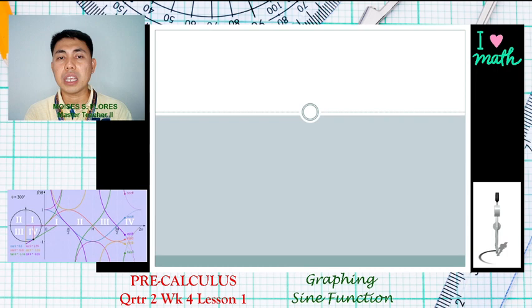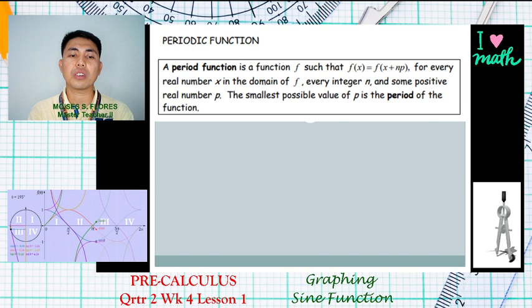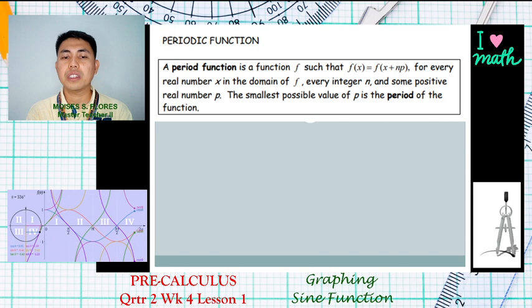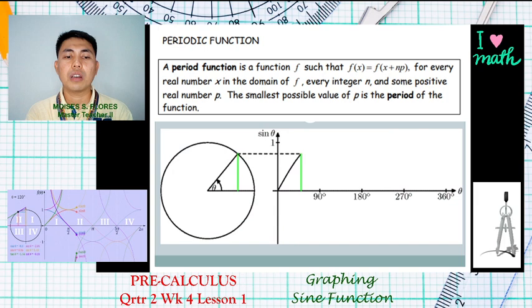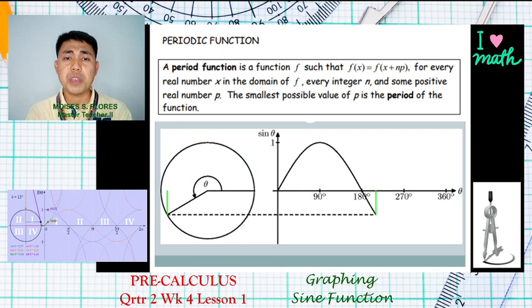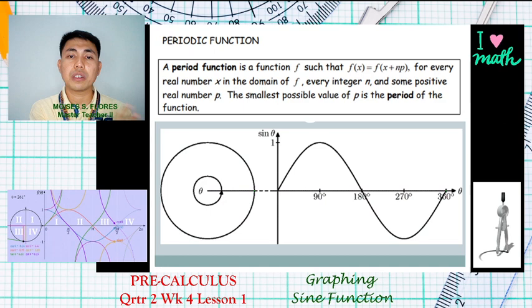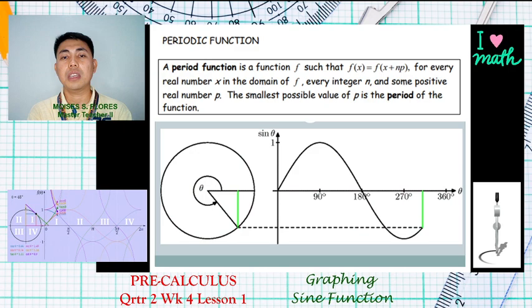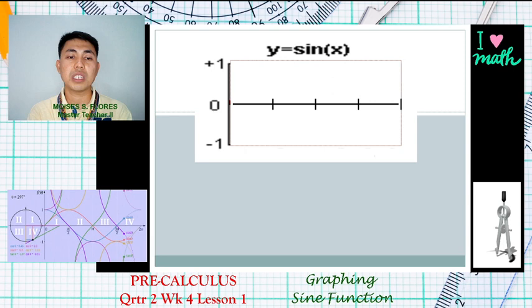Bear in mind that the sine function is a periodic function. A periodic function is a function such that f(x) = f(x + nP) for every real number in the domain of f, every integer n, and some positive real number P, where the smallest possible value of P is the period of the function. With a periodic function, we can repeat the given period symmetrically going to the right or left infinitely — it has a pattern.